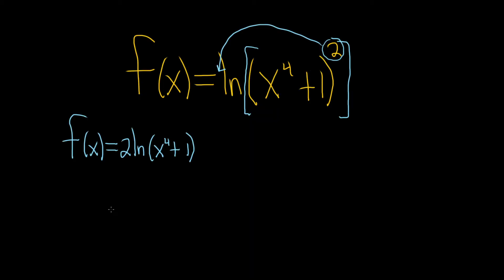All right, so now we're ready to take the derivative. So f prime of x, this is equal to, the two will hang out, so we have two times the derivative of the natural log of x. So in this case, it's the natural log of this, so it's one over that, so x to the fourth plus one times the derivative of the inside.